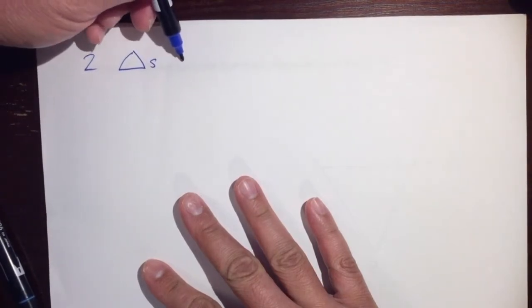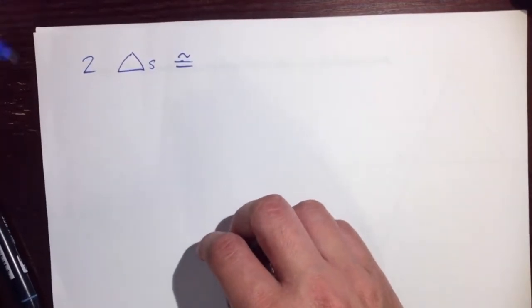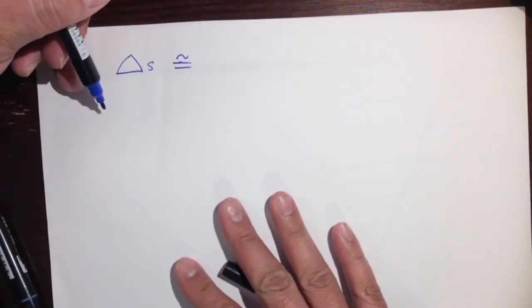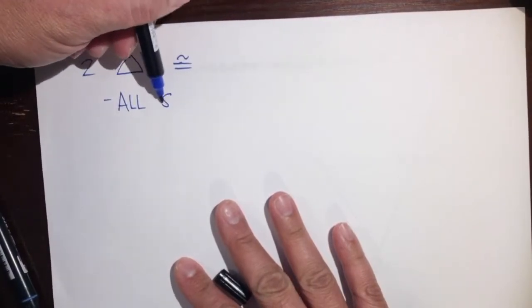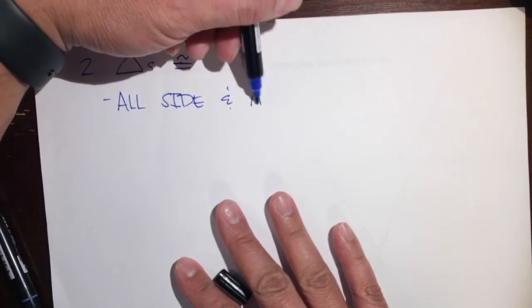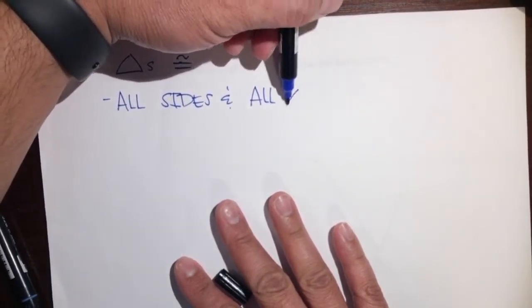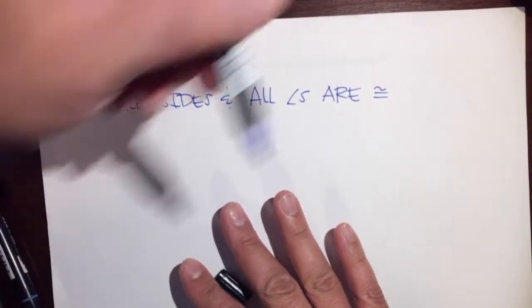Hello, this is Mr. Kinyanola and I'm going to show you how to prove that two triangles are congruent. The general rule is: if two triangles are congruent, then all sides and all angles are congruent.